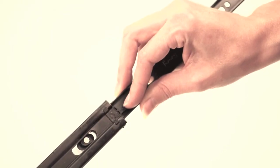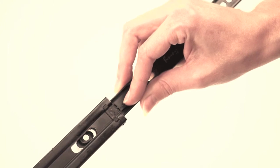Firstly, separate the drawer runners by pushing the plastic catch and pulling the metal sections apart.